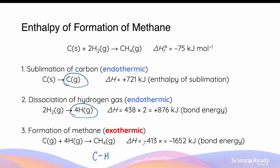The exact energy change in this exothermic step is equal to the bond energy of the carbon to hydrogen bond: negative 413 multiplied by 4 such bonds, which equals minus 1652 kJ released when you form one mole of methane.